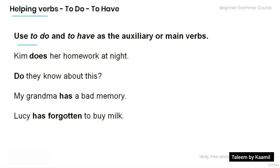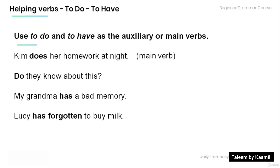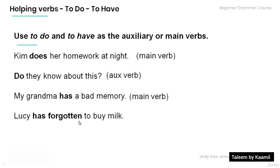Now let's review and practice. Read the following sentences and decide whether the helping verb is the auxiliary or main verb. 'Kim does her homework at night' — main verb. 'Do they know about this?' — auxiliary verb. 'My grandma has a bad memory' — main verb. 'Lucy has forgotten to buy milk' — auxiliary verb.